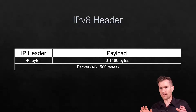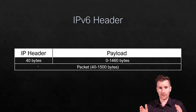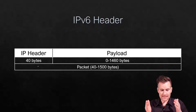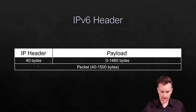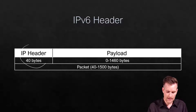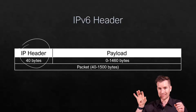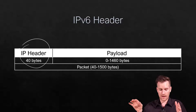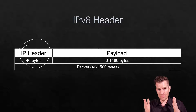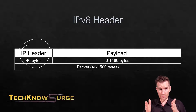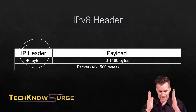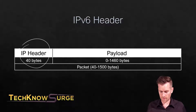One thing that's different about an IPv6 header compared to IPv4 is that the IP header is a fixed length — 40 bytes. One of the efficiencies with IPv6 is that it has this fixed length of 40 bytes.